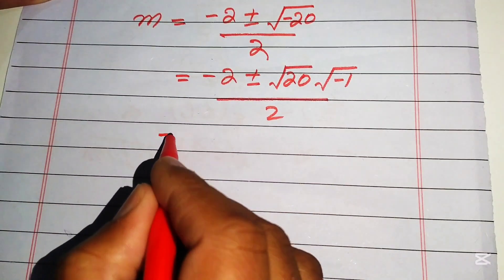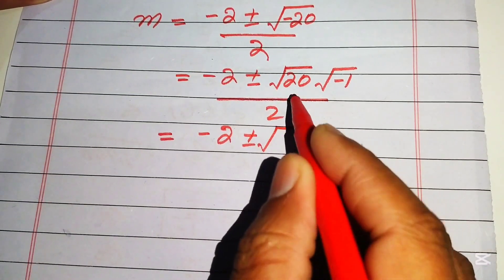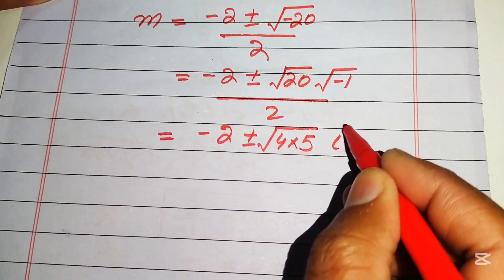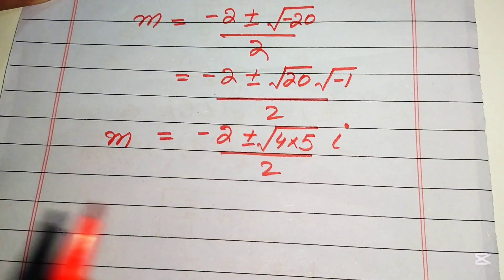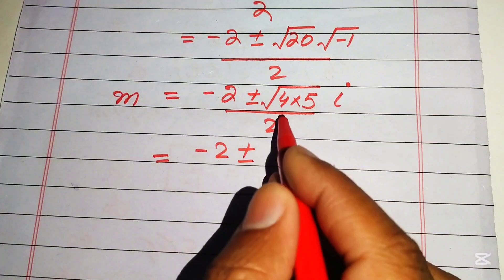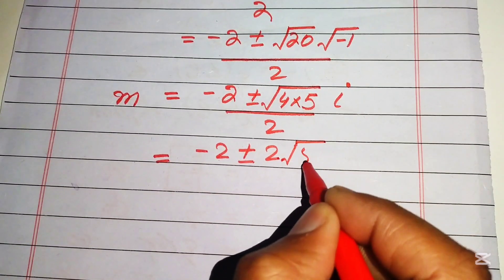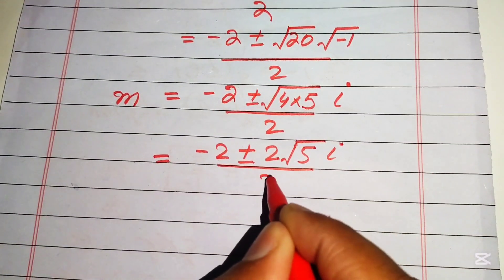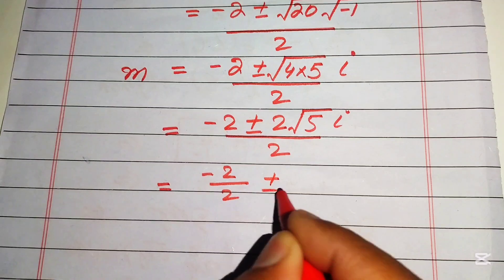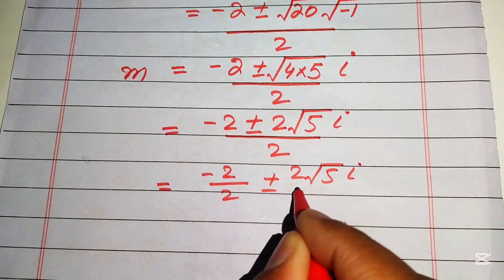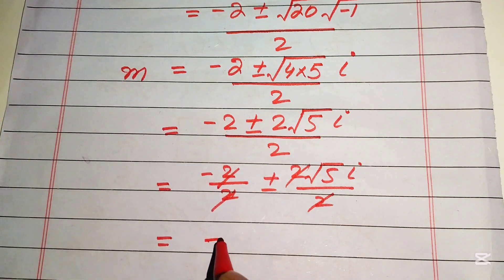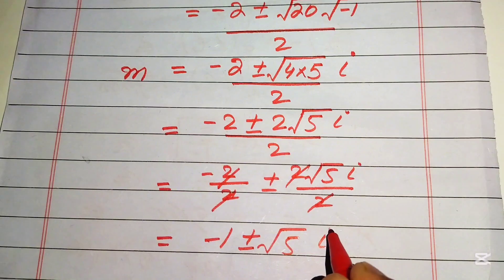We write 20 as 4 times 5, so the square root of 20 equals 2 root 5. The square root of minus 1 equals i (iota). This gives minus 2 plus or minus 2 root 5 times i, divided by 2. Breaking the fraction: minus 2 over 2 plus or minus 2 root 5 i over 2. The 2s cancel, giving m equals minus 1 plus or minus root 5 times i.